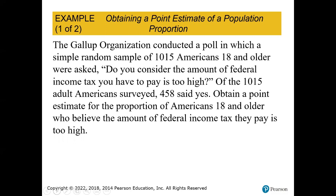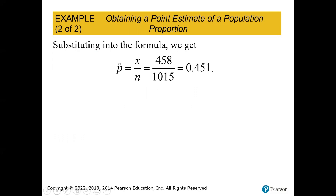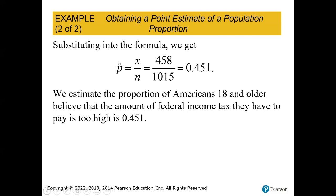We follow the process of creating the fraction — how many out of the total. So 458 out of 1,015 is 0.451. We estimate the proportion of Americans 18 and older who believe the amount of federal income tax they have to pay is too high is 0.451, or based on our survey, about 45% of Americans 18 and older believe their federal income tax is too high.